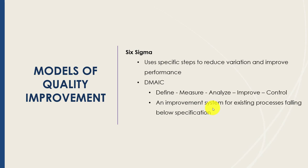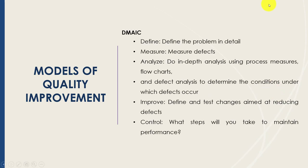Using the Six Sigma system, an organization takes steps to reduce variation and improve performance. The acronym is DMAIC: Define, Measure, Analyze, Improve, and Control. You first define the problem in detail, then measure your current baseline to get an idea of where defects or errors are occurring.